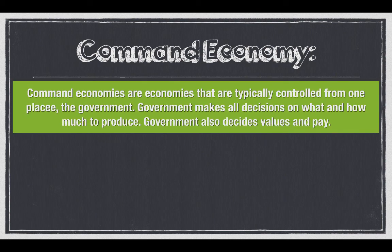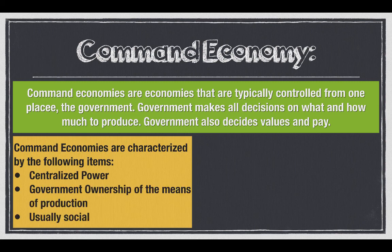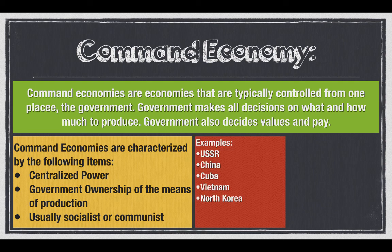Next is the command economy — we're talking about the idea of communism. Command economies are typically controlled from one place: the government makes all decisions on what and how much to produce, and also decides values and pay. They are characterized by centralized power, government ownership of the means of production and resources, and usually follow a socialist or communist government. Examples include the USSR, China, Cuba, Vietnam, and North Korea, though one no longer exists and the others are moving toward a more open economy.